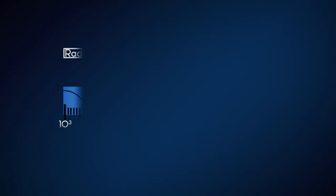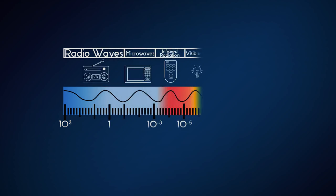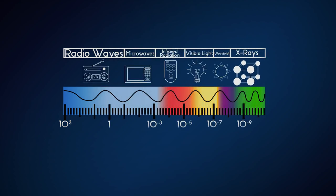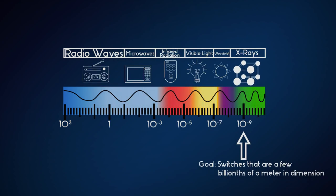We need devices that can retain their state of logic without power — that's known as non-volatility. We also need to be able to read their state or switch their state while supplying just a minimum amount of power to them. These devices also have to be small, a few billionths of a meter on a side. And there's no existing technology that meets these simultaneous demands.